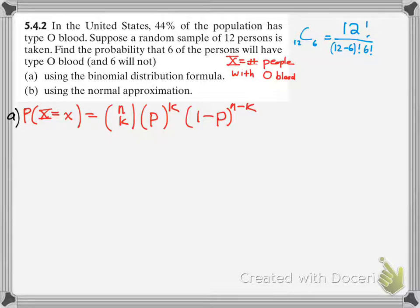It's pretty much the number of combinations times the probability of your success raised to the power of k times the probability of failure raised to the power of n minus k. So, if we say that X is the number of people with O blood and we want 6 of them, then X will have to equal 6.